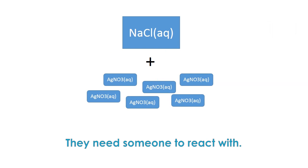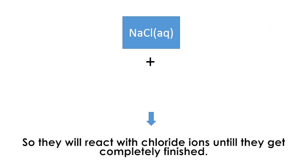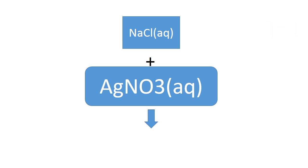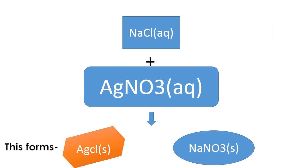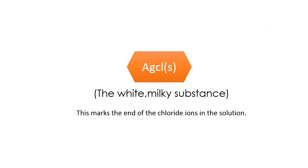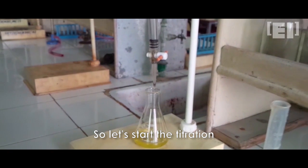The AgNO3 molecules will react with the NaCl molecules and would make AgCl and NaNO3. This AgCl has something special, it is the milky substance that keeps forming until the whole chloride ions are eaten up. So let's see this happen.